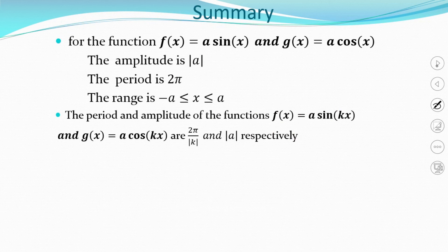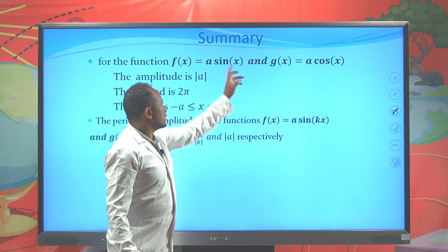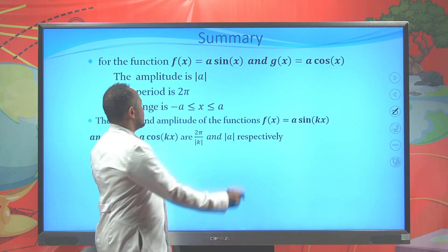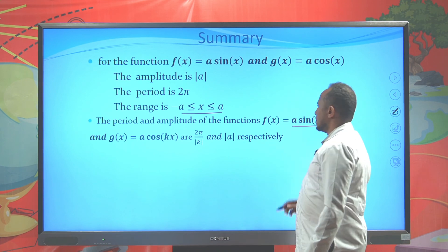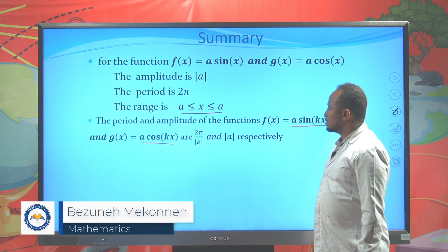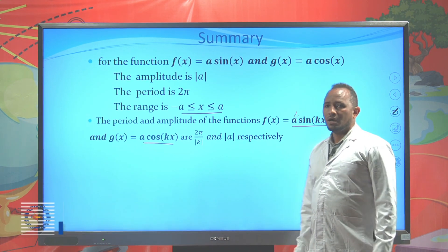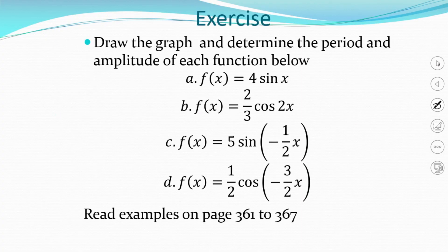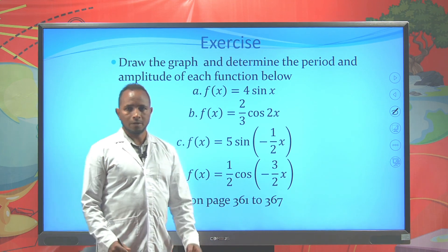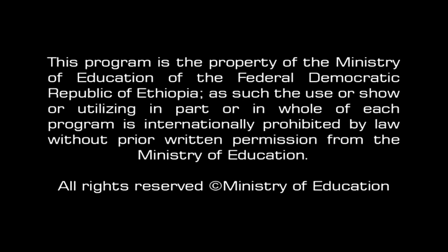To summarize today's lesson: for f(x) = a·sin(x) and g(x) = a·cos(x), the amplitude is |a|, the period is 2π, and the range varies from -a to a. For f(x) = a·sin(kx) and g(x) = a·cos(kx), the amplitude is |a| and the period is 2π/|k|. Please try the exercises and read the examples on pages 361 to 367 to learn more. Goodbye until next class.